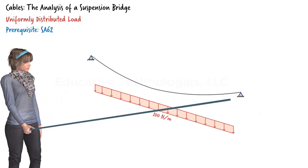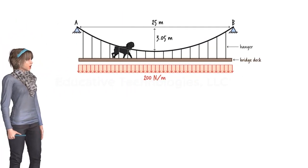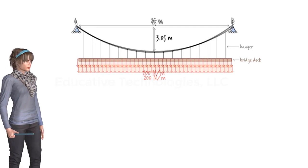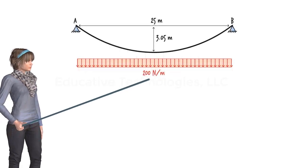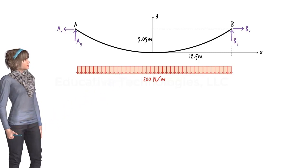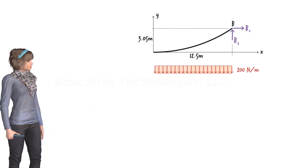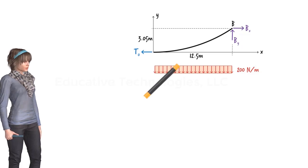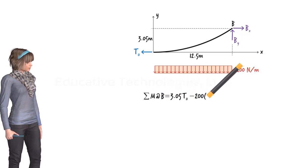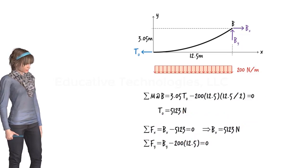Consider a simple pedestrian suspension bridge. The deck of the bridge hangs freely from two main cables via a series of vertical hangers. Our main objective is to determine the maximum tension force in the main cables and the reaction forces acting at the posts. The bridge has a length of 25 metres and a width of 1 metre. The distance from the top of the bridge to the deck is 3.65 metres, and each main cable has a maximum sag of 3.05 metres.